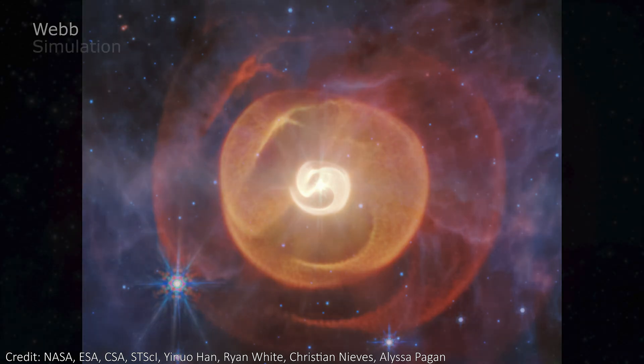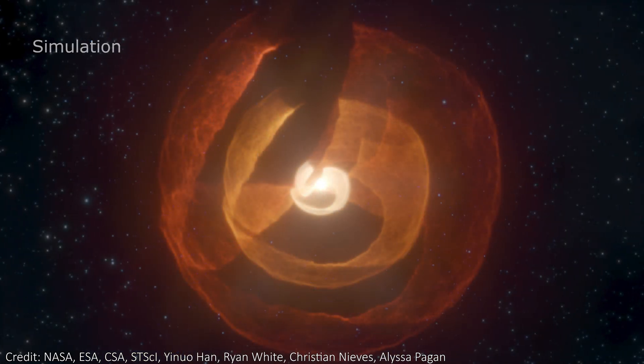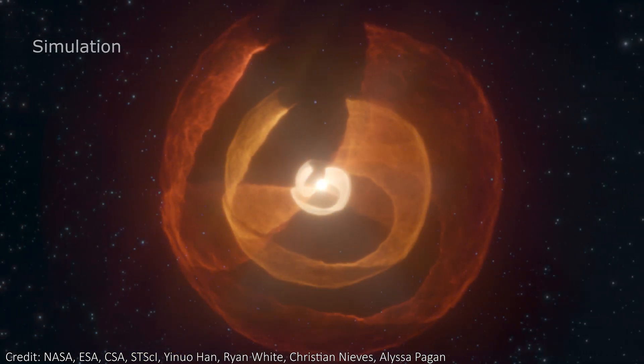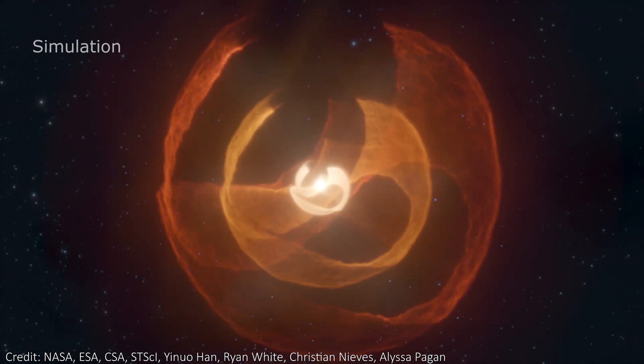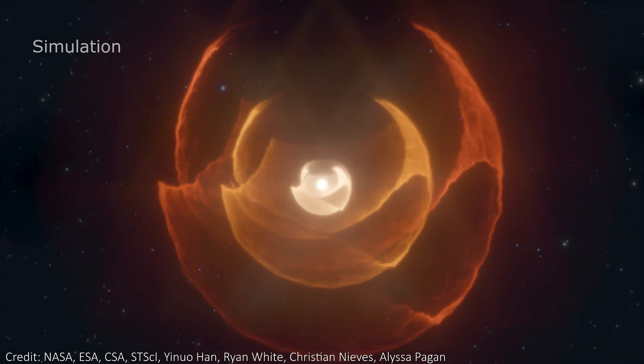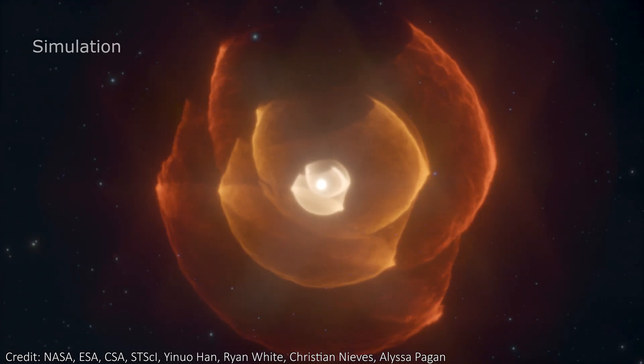Alongside the image from JWST, we also got to see a super cool simulation, based on the data but combined with the updated models, to show what the four dust shells look like in 3D.